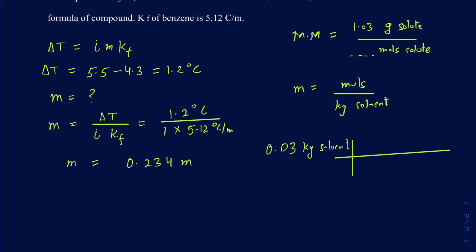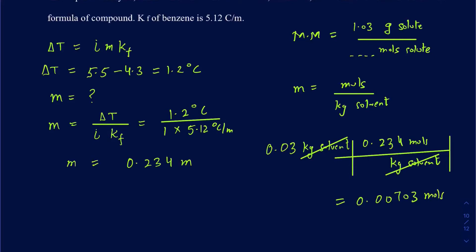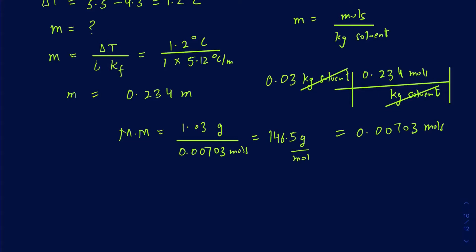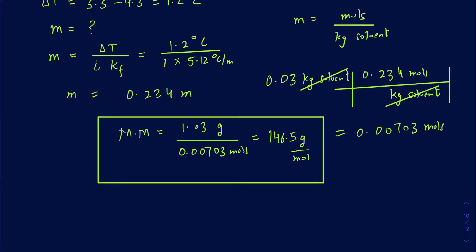Using the molality to find moles: 0.234 mol/kg times 0.03 kg — the kilograms cancel — giving 0.00703 moles of the unknown compound. Now we plug that back into the molar mass formula: 1.03 grams divided by 0.00703 moles equals 146.5 grams per mole. So that's how we figure out the molar mass of this unknown compound.